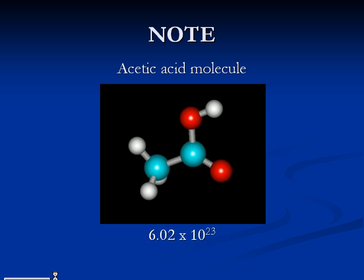Note that acetic acid is a molecular compound made up of molecules. When we say something like one mole of acetic acid, what we mean is one mole of acetic acid molecules, or a collection of 602 billion trillion, or 6.02 times 10 to the 23rd acetic acid molecules.